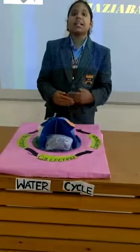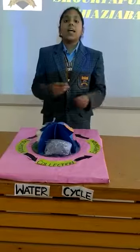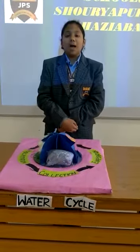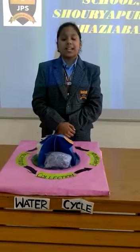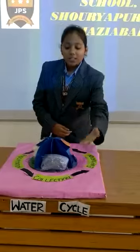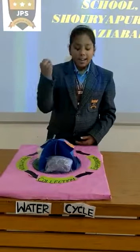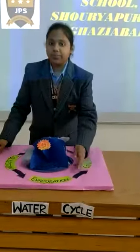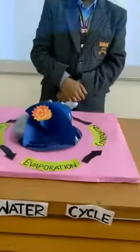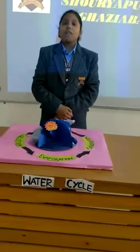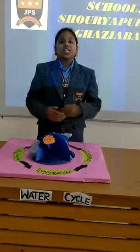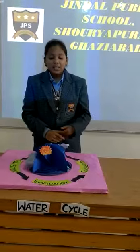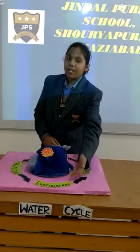When the water is collected in bulk in the form of river, ocean, swamps, ponds etc., it is called collection. Then the second part is evaporation. When the liquid changes into gaseous and rises up into the sky, it is called evaporation.